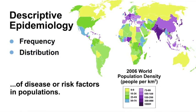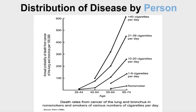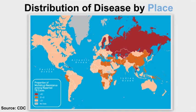Descriptive epidemiology can be used for hypothesis generation, but usually cannot be used to test hypotheses. This graph shows lung bronchus cancer risk by amount of smoking per day — an example of looking at a distribution of disease by person, where personal characteristics include age category and smoking history. This map shows the estimated tuberculosis incidence rates in 2010 by country, an example of examining the distribution of disease by place.